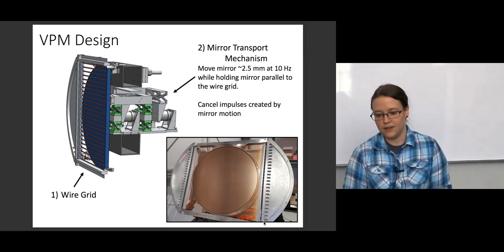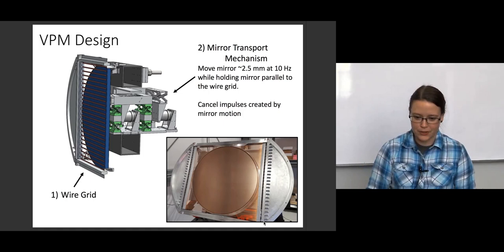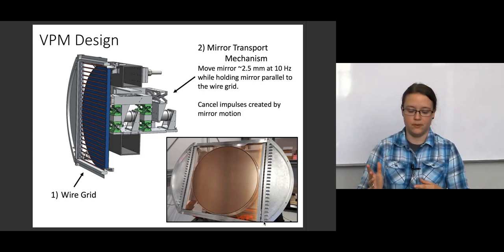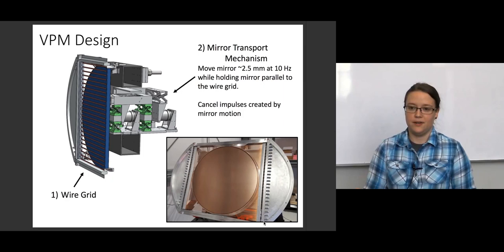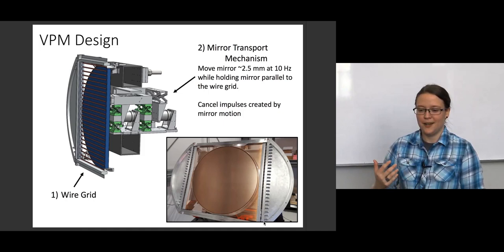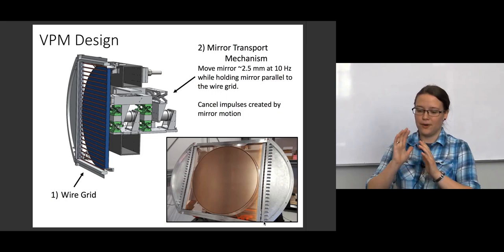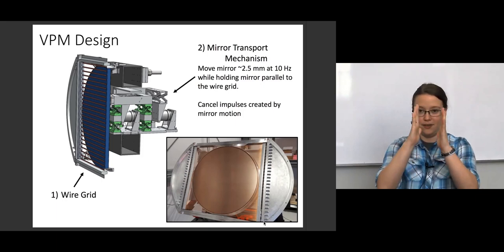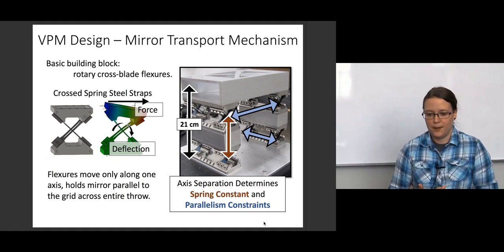So, what's showing here is kind of a schematic design of the VPM along with a photo of the W-band VPM down at the site, actually, in a high bay. So, as I had explained, the VPM is a wire grid in front of a movable mirror. So, you kind of really need two things to get this VPM going. You need a wire grid, and you need a mirror that can move. And it needs to move back and forth. The Q-band VPM has to move over a millimeter and a half back and forth at ten times a second. And you need to do that while the mirror and the wire grid stay super parallel to each other.